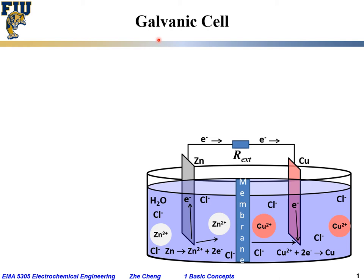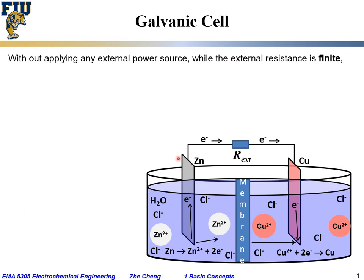Now we are going to talk about a specific type of electrochemical cell called a galvanic cell. This is our example of copper and zinc metal inserted into an electrolyte solution that contains zinc chloride and copper chloride. Sometimes, as we said earlier, there may be an ionic permeable membrane that separates the zinc section from the copper section.